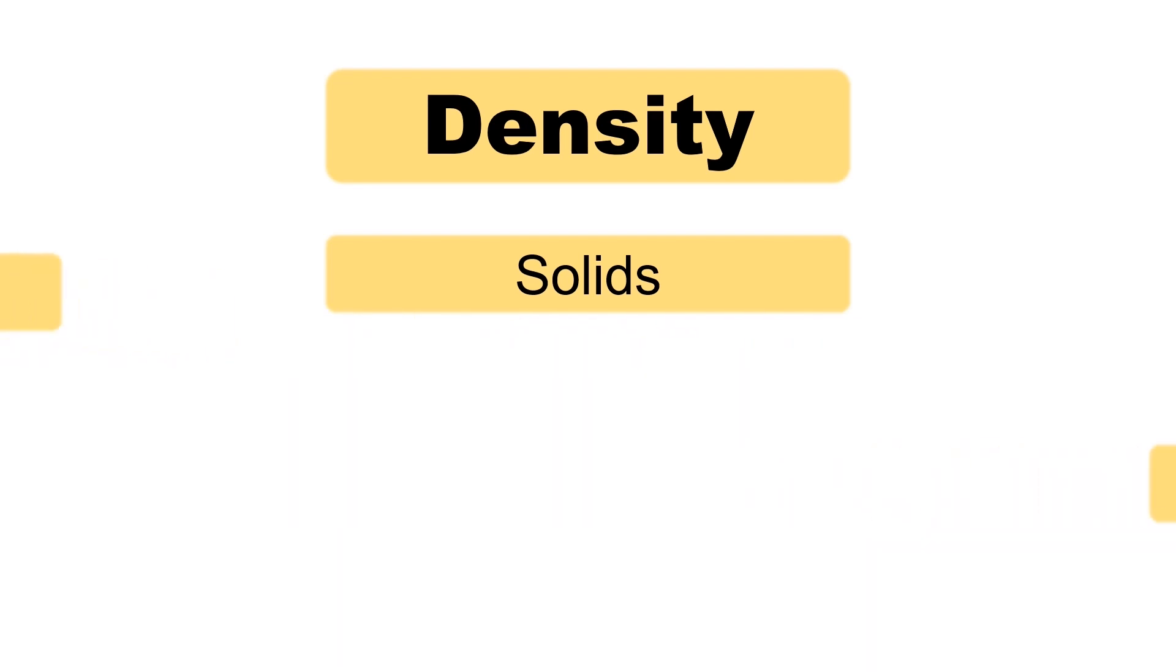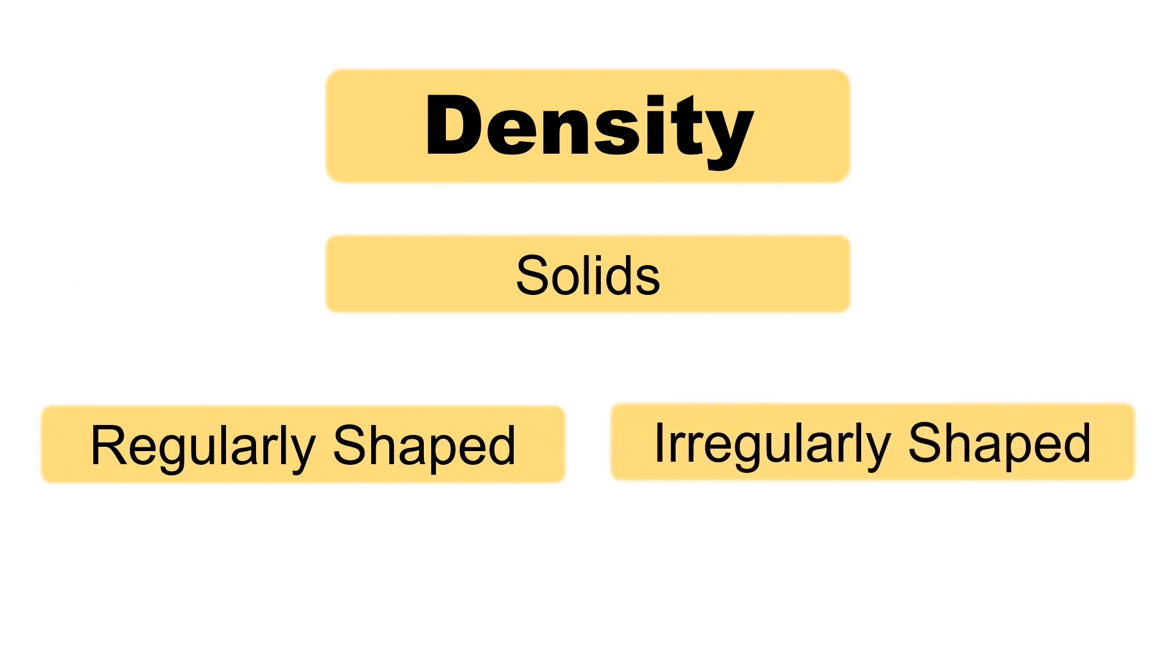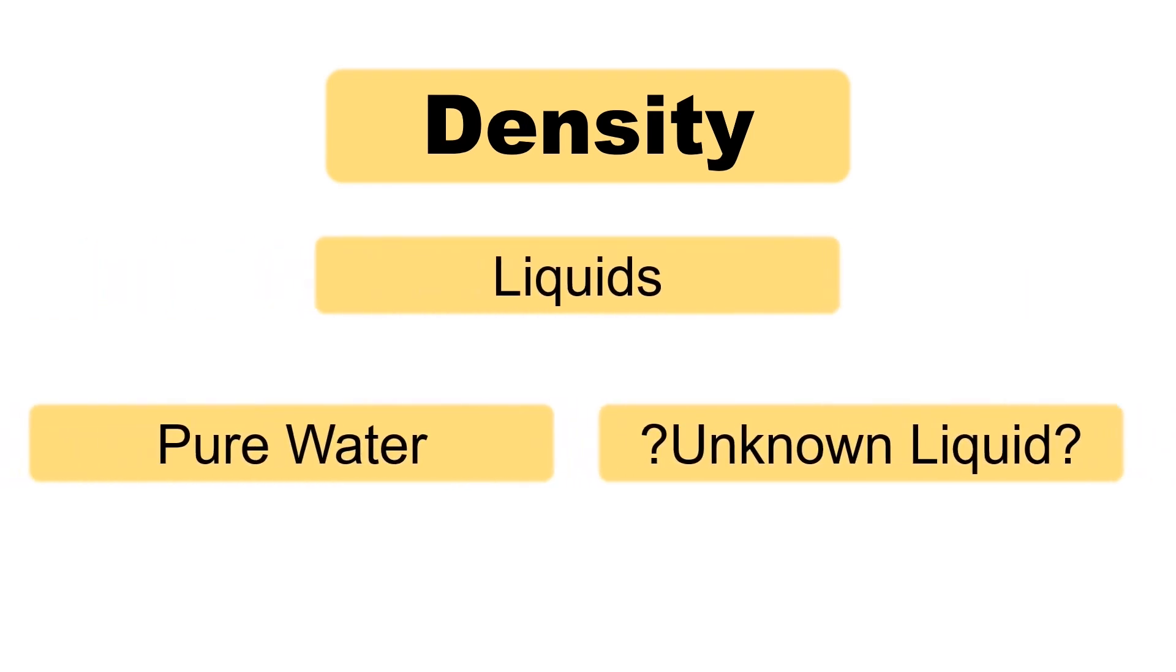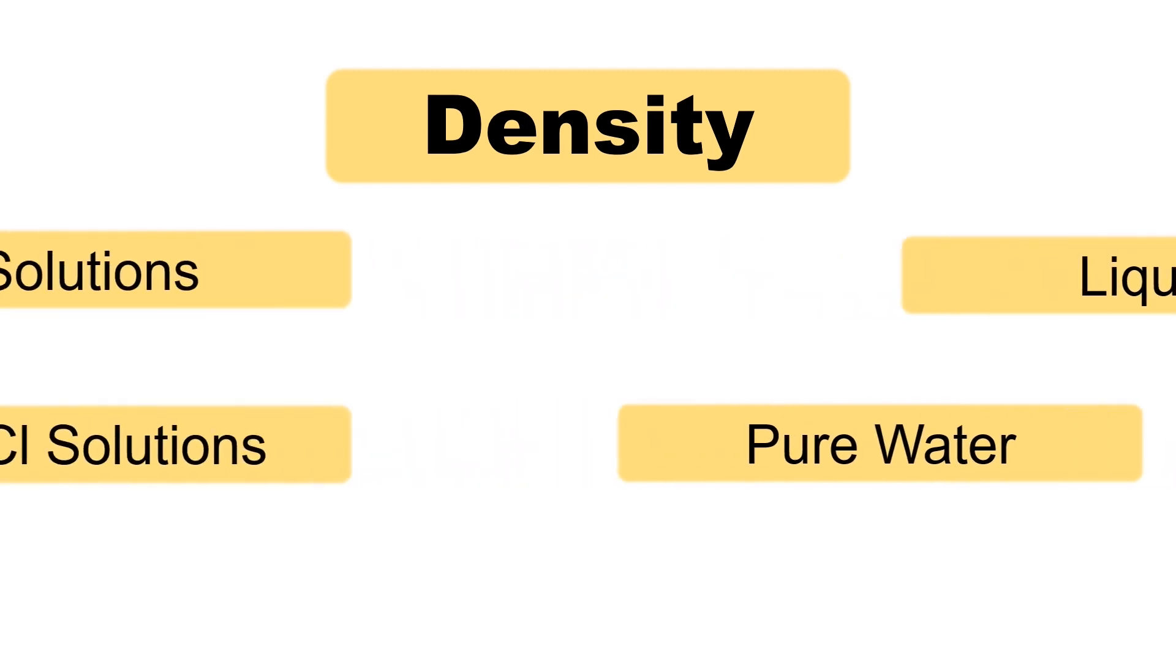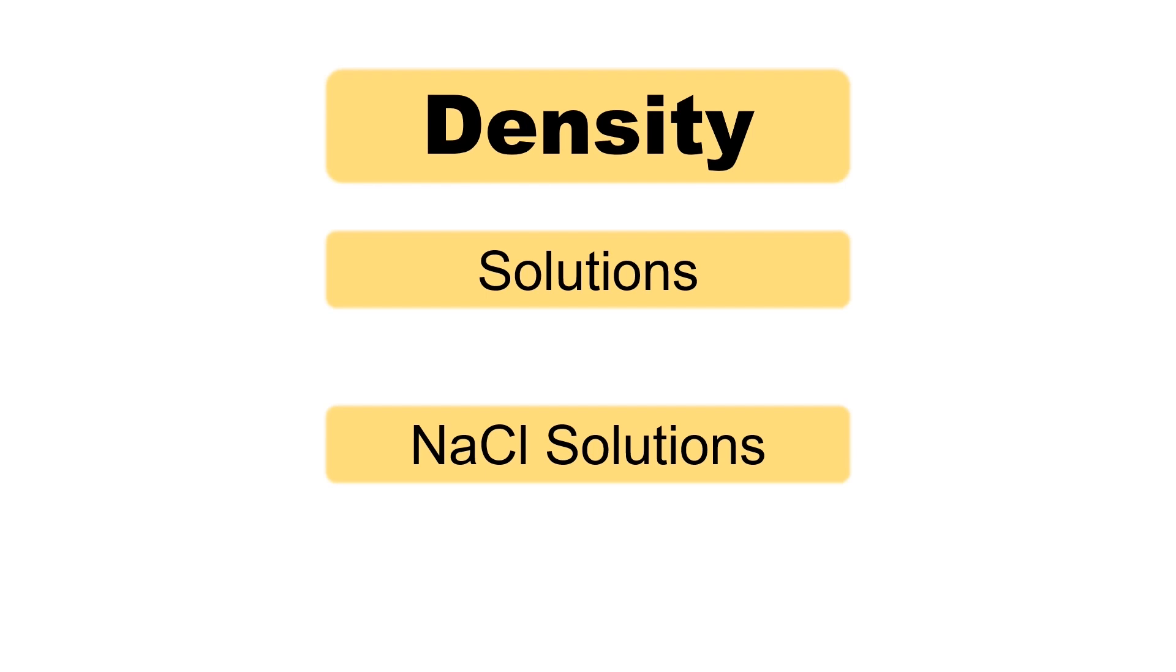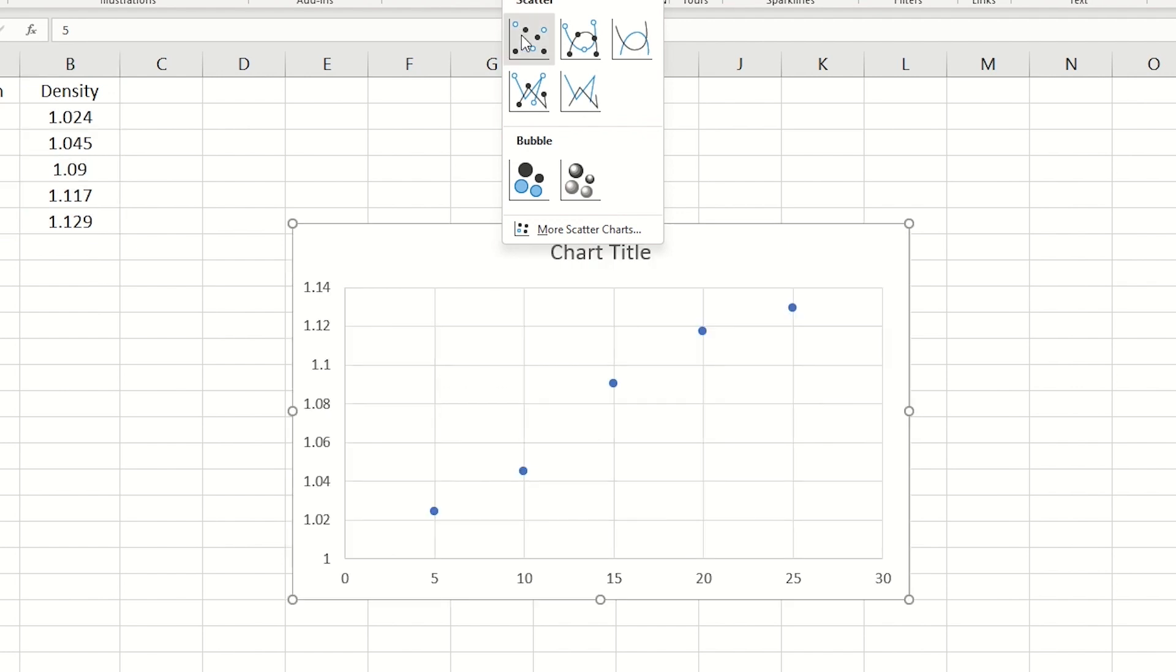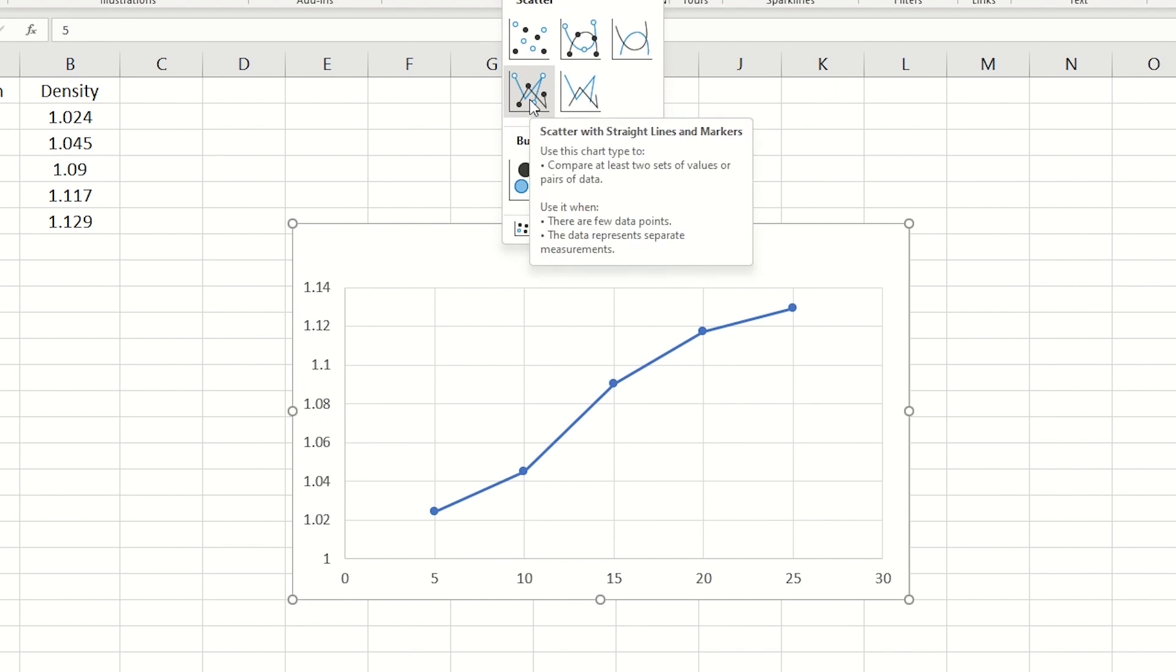We'll find the densities of regularly shaped solids and irregularly shaped solid metal pellets. In the second part of the lab, we'll find the densities of pure water liquid and an unknown liquid, then identify the unknown liquid based on its density. In the final part of the lab, we'll find the density of different concentrations of sodium chloride solutions based on their mass percent concentrations and create a calibration curve. I'll show you how to plot the data in Excel and add an equation so we can find the concentrations of other solutions based on the calibration curve.